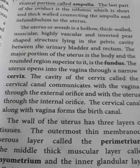The wall of the uterus is thick and muscular, differentiated into three distinct layers: the outermost thin membranous layer called the perimetrium, the middle thick muscular layer called the myometrium, and the inner glandular layer called the endometrium. The endometrium undergoes cyclic changes during the menstrual cycle.